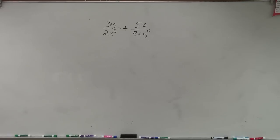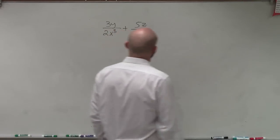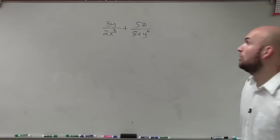Looking in at this problem, what we're going to do is I have 3y divided by 2x cubed plus 5z divided by 8xy squared.